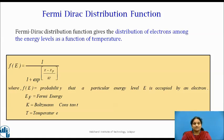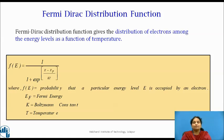The function F(E) indicates the probability that a particular quantum state at the energy level E is occupied by an electron, and E_F is known as the Fermi level. In general, this E_F may or may not correspond to an energy level, but it provides a reference with which other energies can be compared. The function F(E) is known as the Fermi factor.